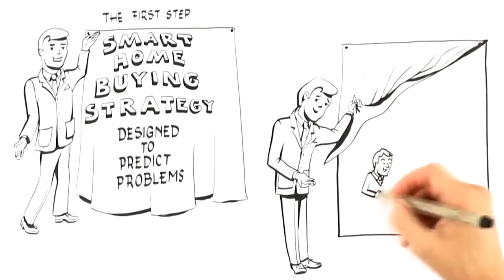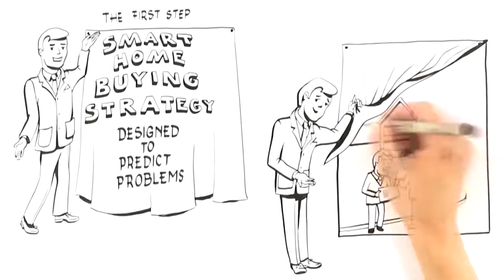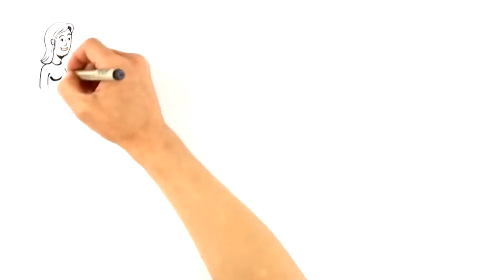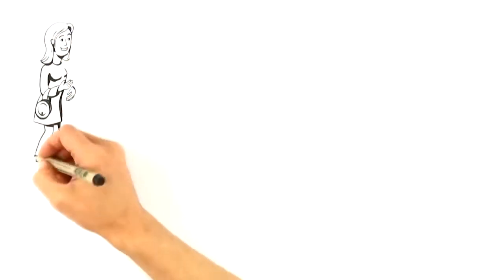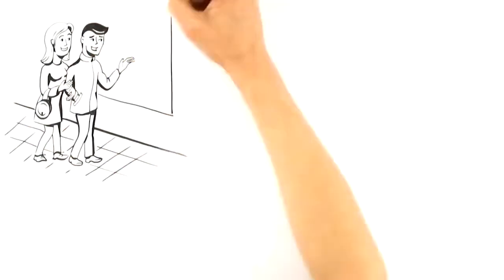They unknowingly put themselves at a significant disadvantage which prevents them from seeing all of their options and are at risk of overpaying for the home they choose. This mistake typically occurs when a buyer sees an attractive property online, from the street, or in an advertisement, and then calls or emails the agent for more information.